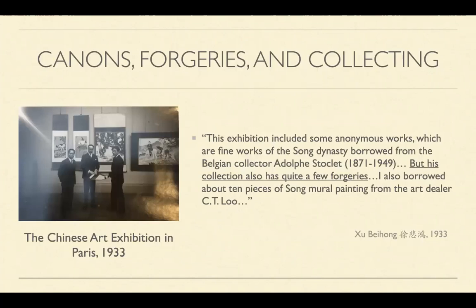Because of this, there are quite a few forgeries, copies, and misattributed paintings in European art museums. When Chinese artist Xu Beihong organized a Chinese art exhibition in Paris and other European cities in 1933, he noticed quite a few forgeries in the collections of European collectors. He wrote that the exhibition included fine works borrowed from Belgian collector Adolphe Stoclet, but his collection also had quite a few forgeries, and about ten pieces of Song mural paintings were borrowed from art dealer Situ Lu.